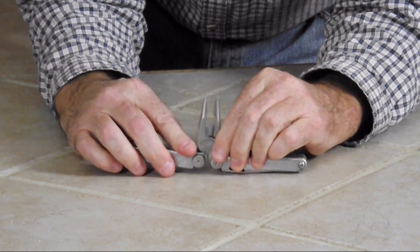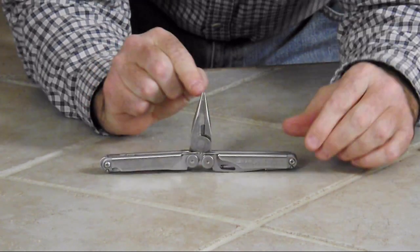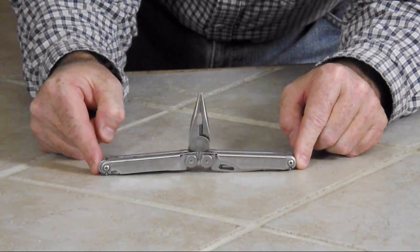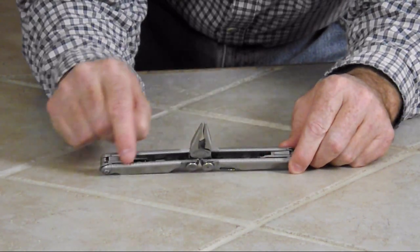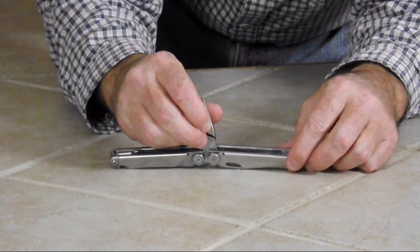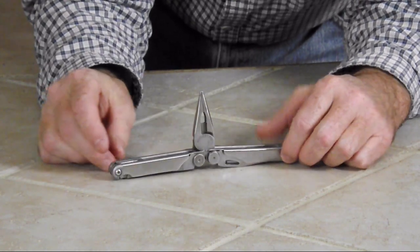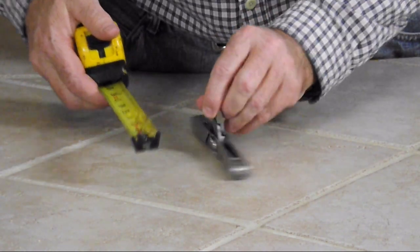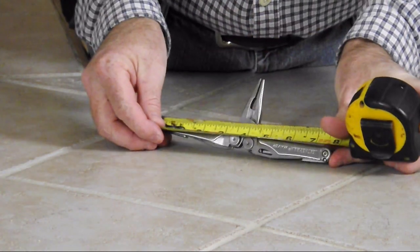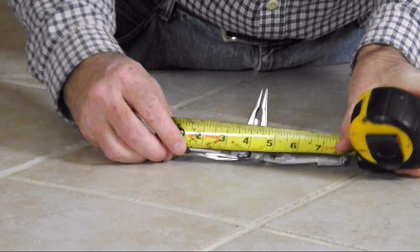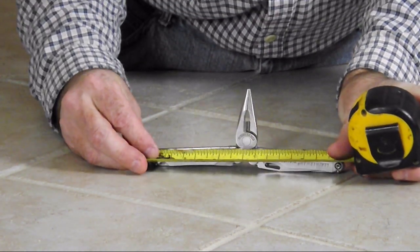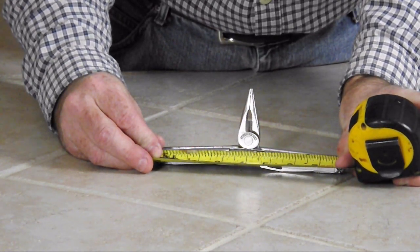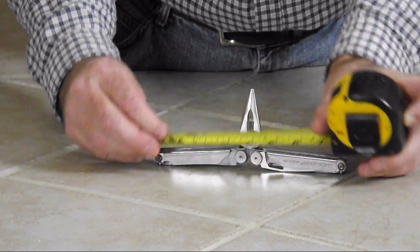The last thing I want to share is with the pliers closed, this is exactly eight inches from tip to tip. There's a ruler in inches on this side and centimeters on this side. If you take your steel tape, the calibrations in their tape line up exactly with my steel tape. Very accurate. Very handy to have.